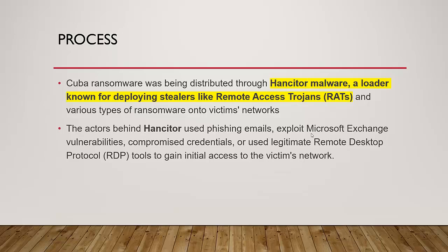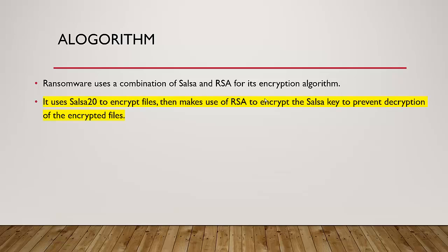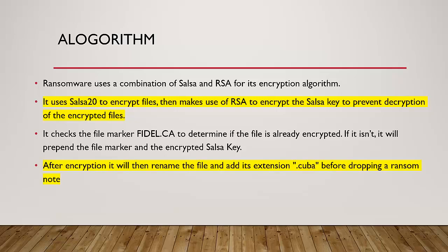Regarding the encryption algorithm: Cuba uses Salsa20 to encrypt files, with AES as a fallback, and RSA for key exchange. RSA is used to encrypt the Salsa20 key to prevent decryption of encrypted files. When encrypting, it checks the file marker for 'fidel.ca' to determine if a file is already encrypted — if not, it prepares the file marker and encrypts the Salsa20 key again, making decryption very difficult. After encryption, files are renamed with the extension '.cuba', so if you find files with the .cuba extension, your system has been infected.